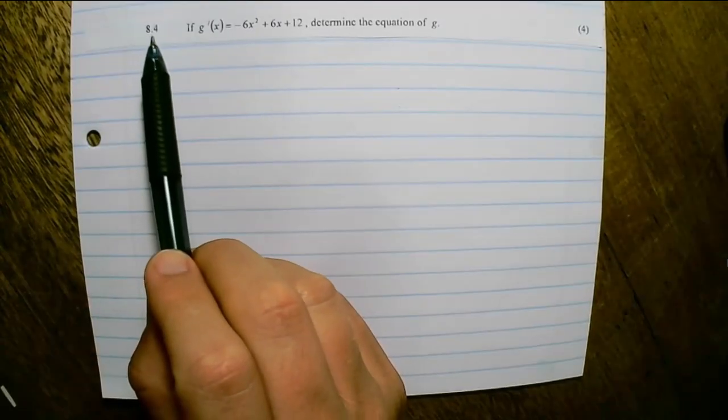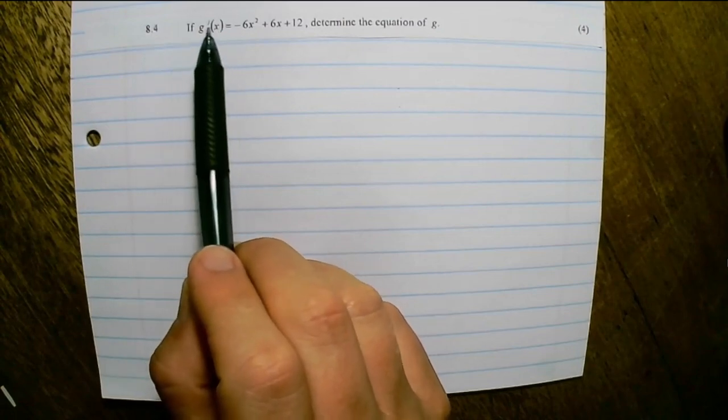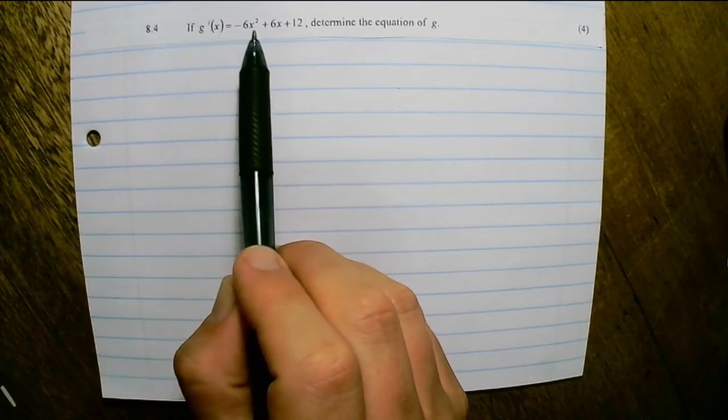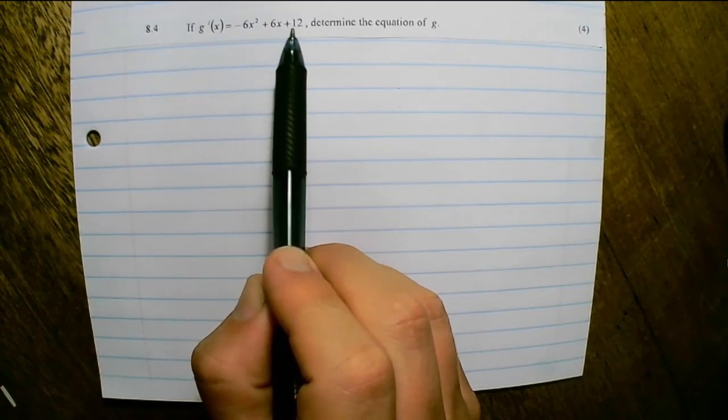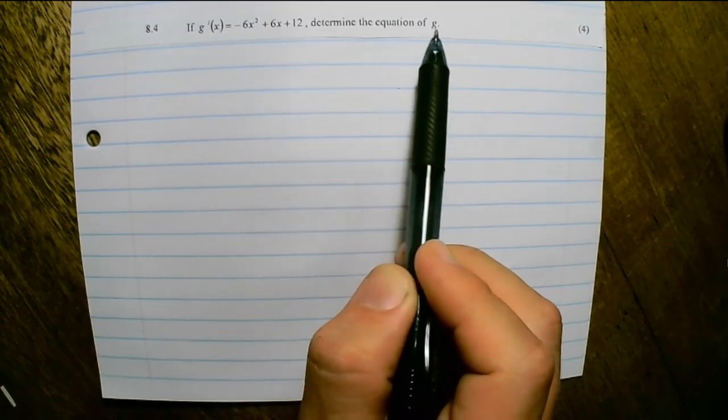8.4, if the first derivative of g(x) equals negative 6x squared plus 6x plus 12, determine the equation of g.